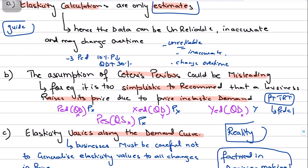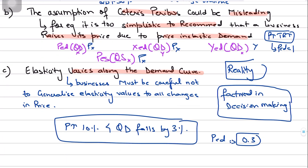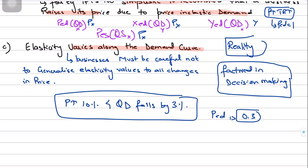These are the limitations - the criticisms - that you could write of elasticity in providing useful insights for businesses. If they are not factored into account and business decisions are solely made on the basis of elasticity coefficients, they could make the entire business worse off instead of better off. So that's it guys, I'll see you in the next video. Till then, take care.